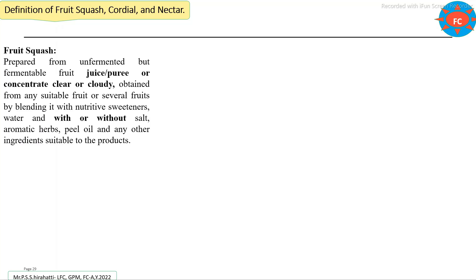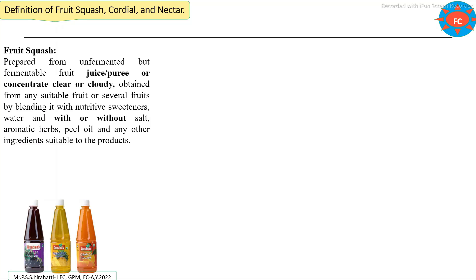The definition of fruit squash, as per the food safety standard in India: fruit squash is the product made from fruit juice, fruit pulp, fruit puree, or fruit concentrate, which may be clear or cloudy — that means it may contain suspended particles — added with sugar syrup and permitted additives and other substances like salt, aromatics, herbs, etc.